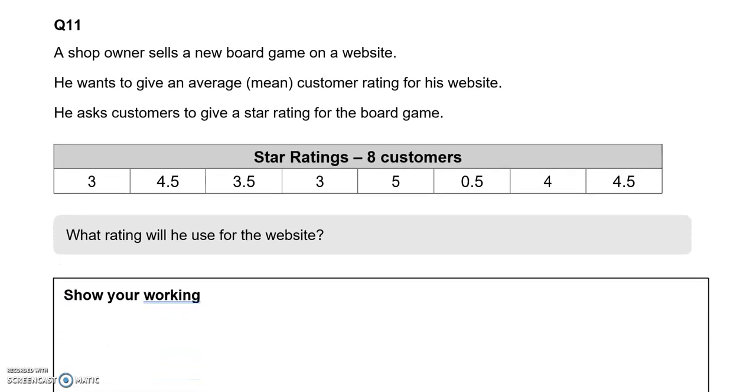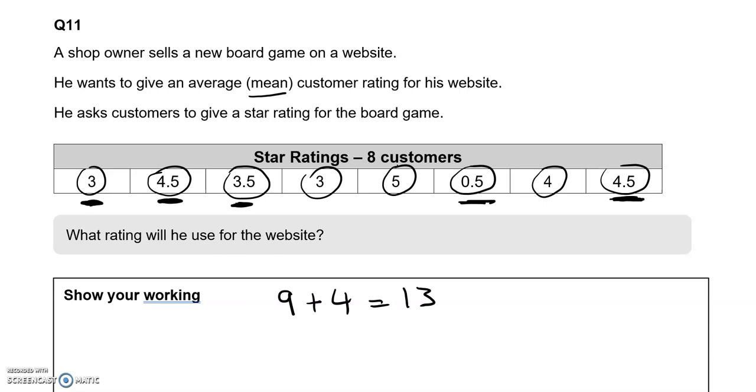Shop owner sells a new board game on website. He wants to give an average, mean customer rating for his website. He asks customers to give a star rating for the board game. What rating will they use for the website? Show your working. So we've got 3, 4.5, 3.5, 3, 5, 0.5, 4, 4.5, which we're going to add all together. Okay, so I'm going to add the decimals first. So if I add 4.5 and 4.5, that's going to give me 9. If I add 3.5 and 0.5, it's going to give me 4. So that is 13. Now adding 3 to that makes 16. Adding 4 to that makes 20. 25, 28.